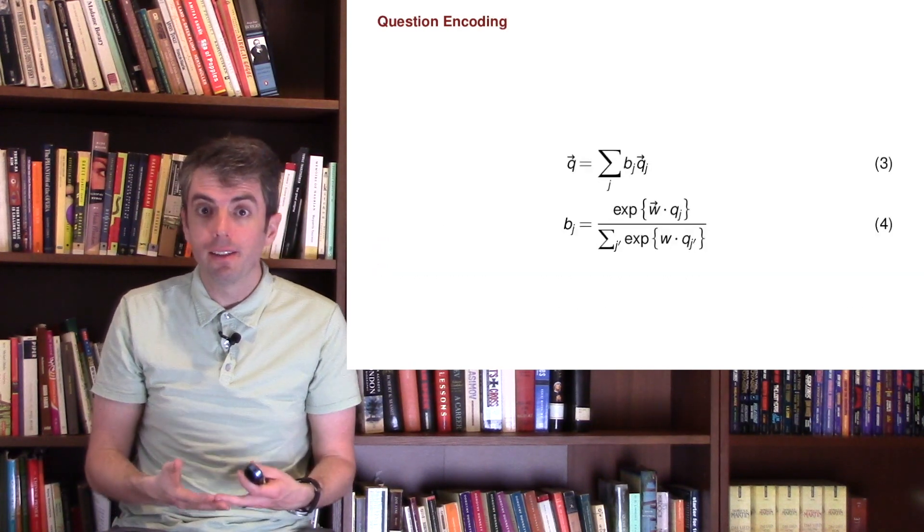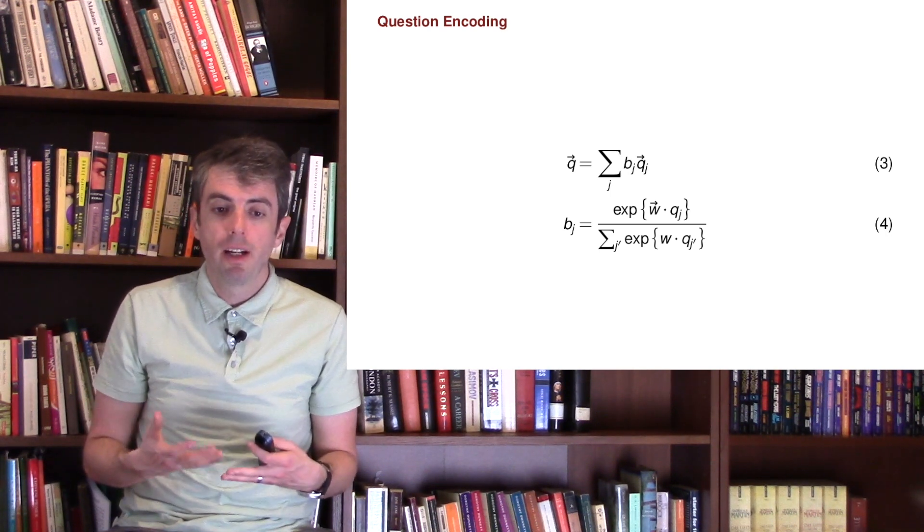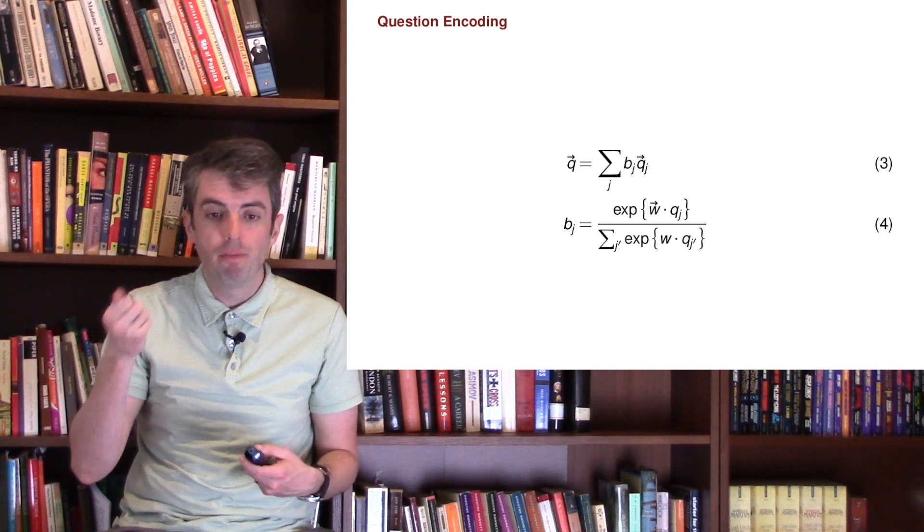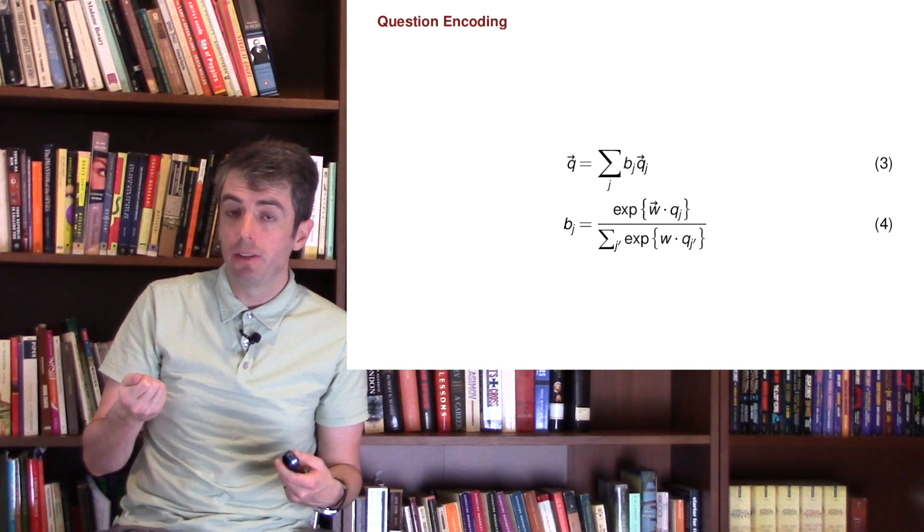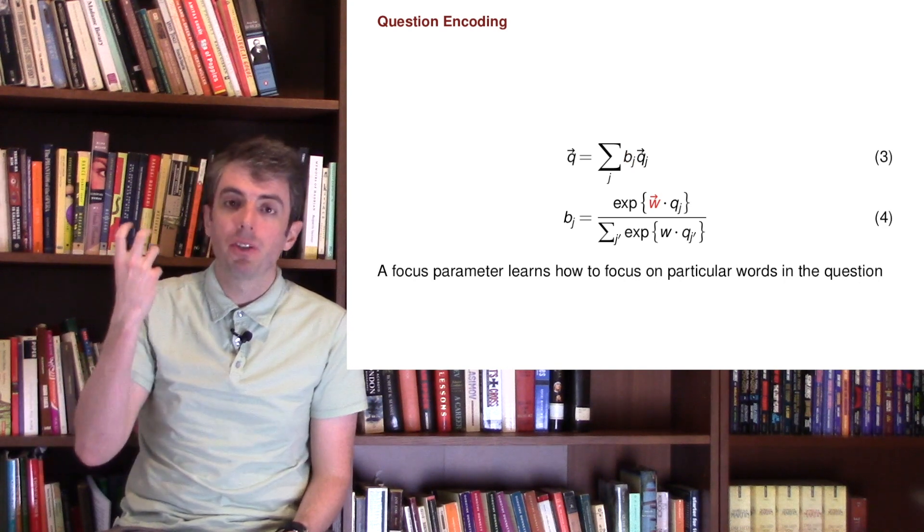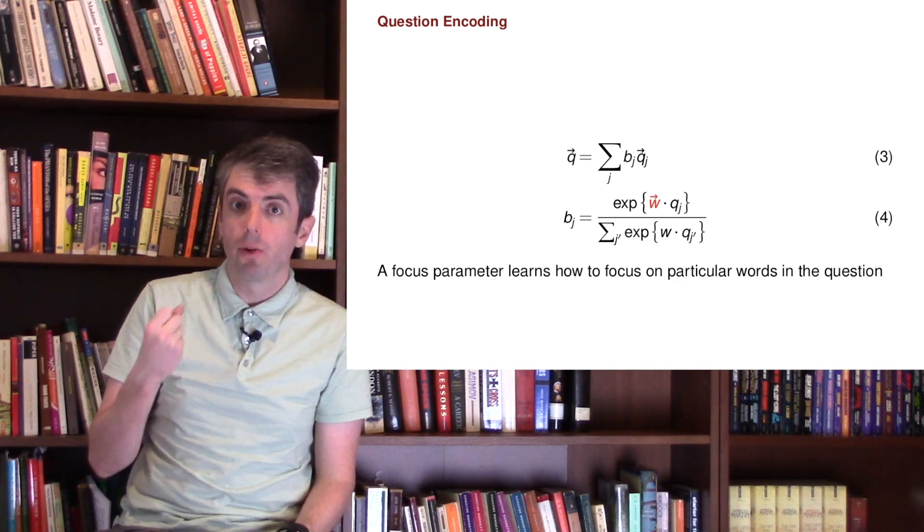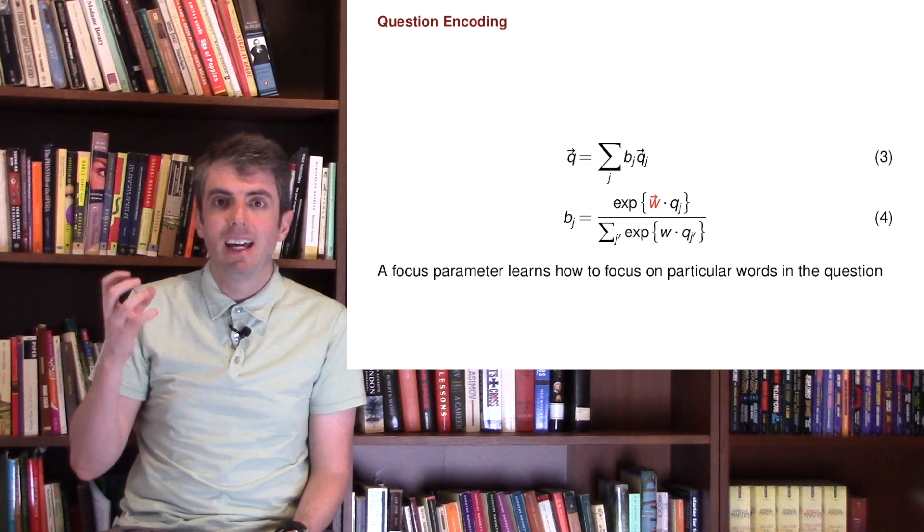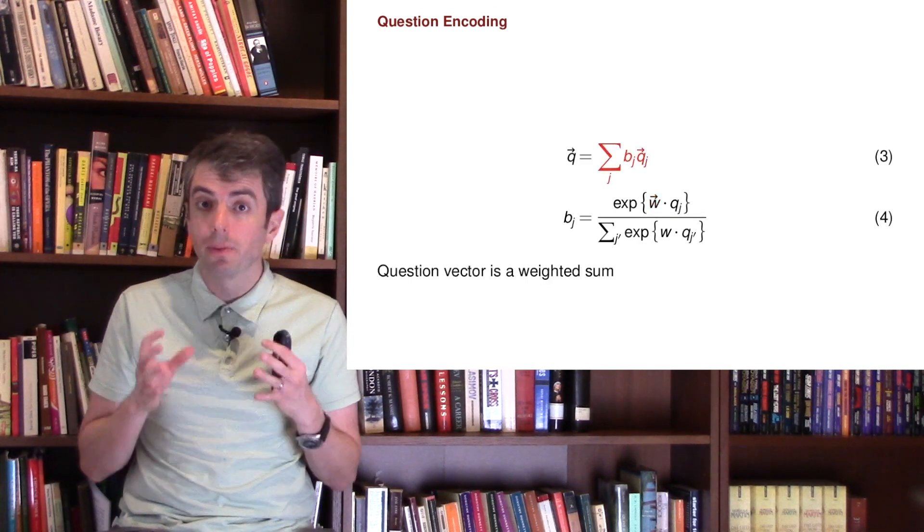So where does the question vector come from? This looks relatively familiar - a lot like our deep averaging network that we had before. You take each of the individual word vectors in your question and you have a weighted sum of them. How do you combine those into a single vector? That's encoded in the scalar b. You have this parameter w that learns how to focus attention on the important words of the question - what parts of the question do you need to particularly remember in order to answer it?